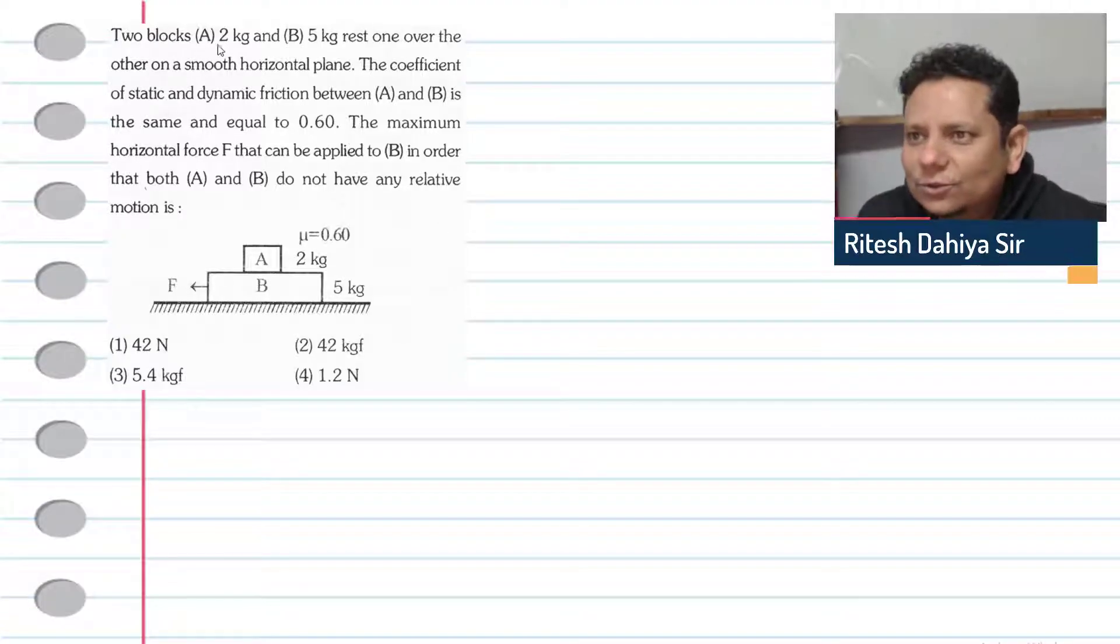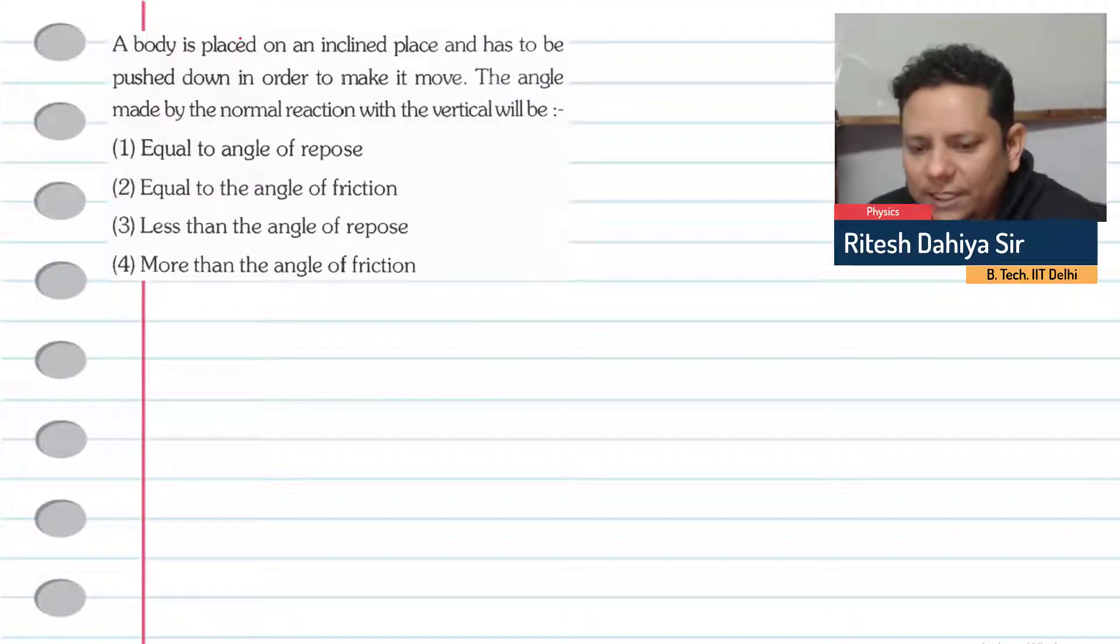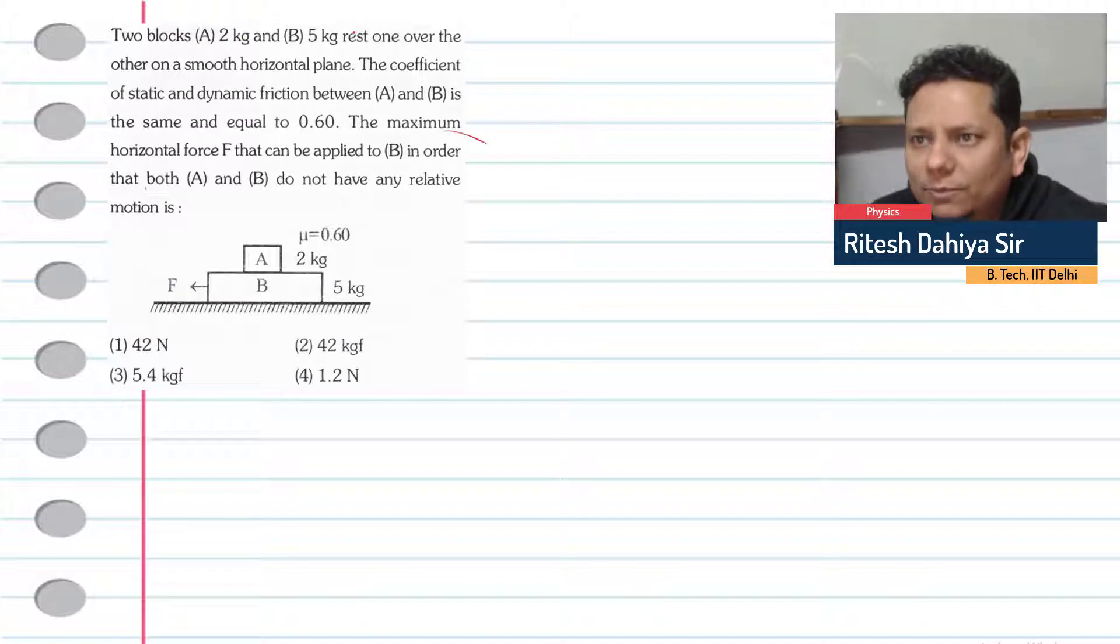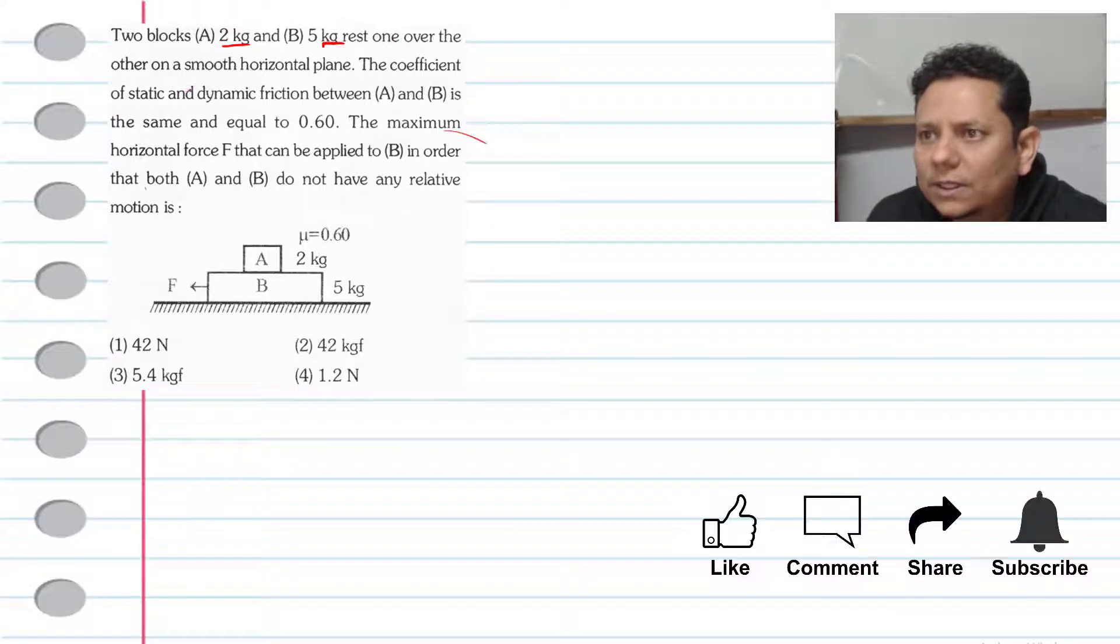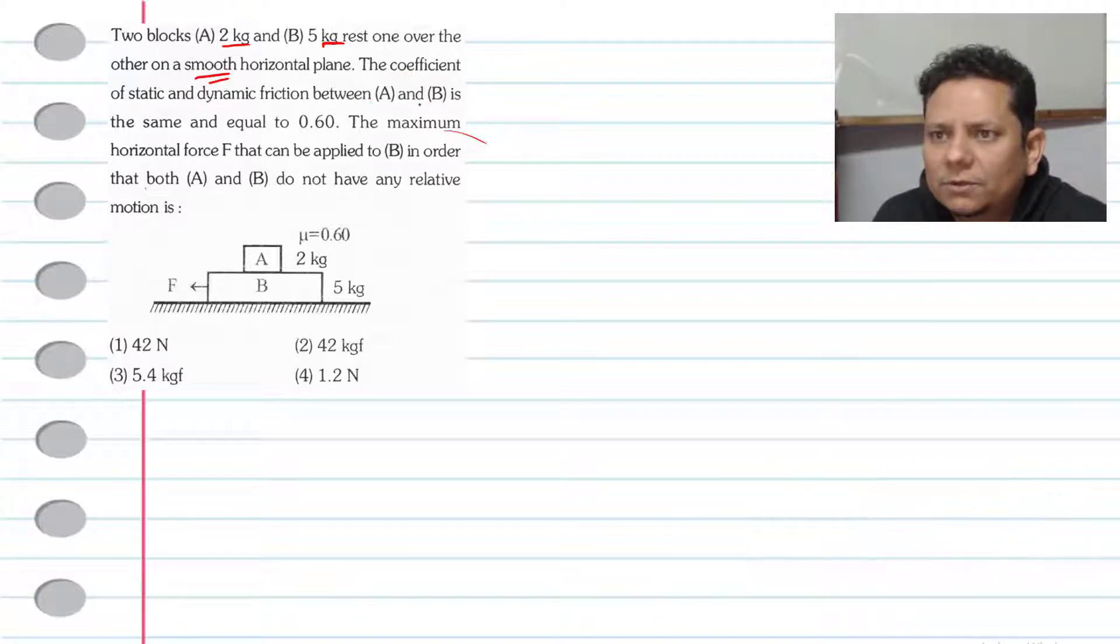Next question: Two blocks A of mass 2 kg and block B of mass 5 kg rest one over the other on a smooth horizontal surface. The coefficient of static and dynamic friction between A and B is the same, 0.6. What is the maximum horizontal force F that can be applied to B so that both A and B do not have relative motion and go together?